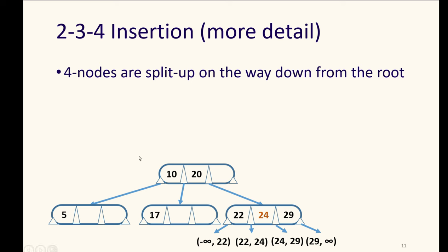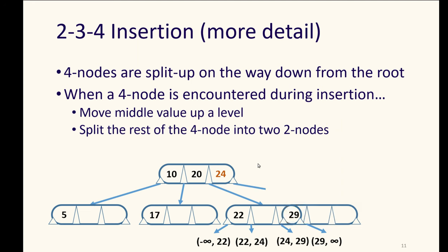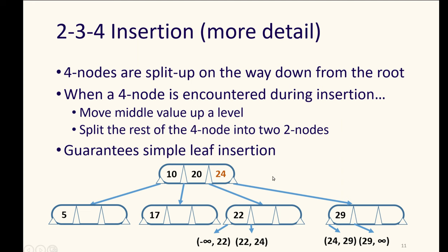Four nodes get split up on the way down from the root. And this ensures that there is room when you finally reach the location that you would be putting the leaf at. So for example, if I needed to insert a value into this tree, I wouldn't have to split the root here because it's not already full. When I get to a four node, as I'm trying to insert stuff, then I move its middle value up one level. I can insert the middle value at one higher level. I know that space existed at that higher level, because if there had been a four node at that higher level, I would have split it.